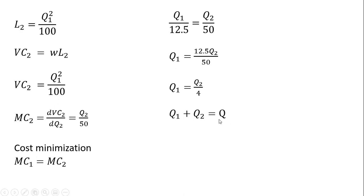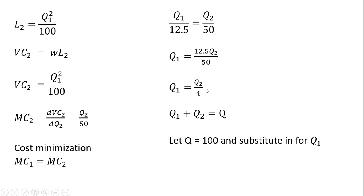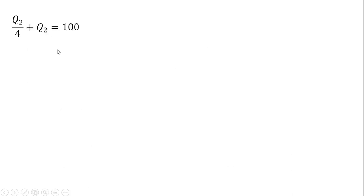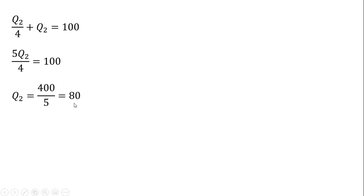The firm's total output Q is just output from plant one plus output from plant two. Let's let Q equal 100 — I could have picked any value, but 100 works well. Plugging in 100 for Q and substituting Q subscript two divided by four for Q subscript one, we simplify the left-hand side. Multiplying everything through by four divided by five, we find that Q subscript two equals 80 units. And since output at plant one is one-fourth the output at plant two, 80 divided by four gives us 20.